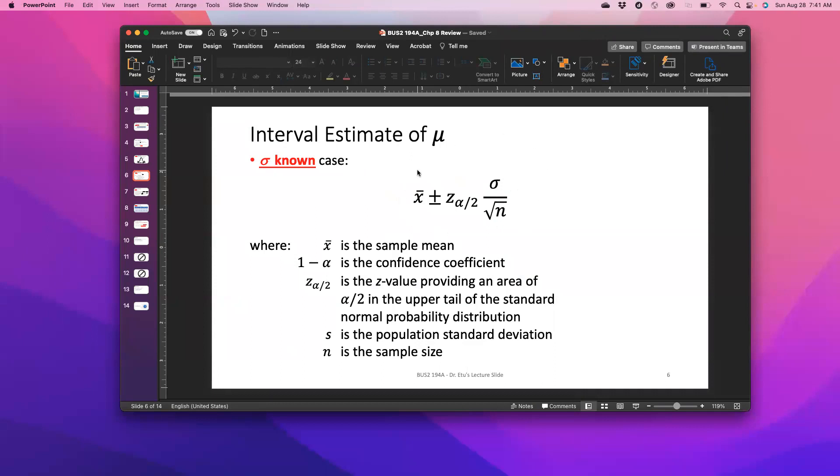Remember, the equation here is to find the confidence interval of the population mean, especially when sigma is known, that is the population standard deviation is known. So it's basically X bar plus or minus Z alpha over 2, and then sigma over square root of N. This is when sigma is known. So please take note of that.